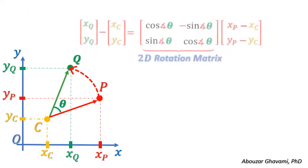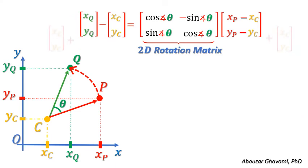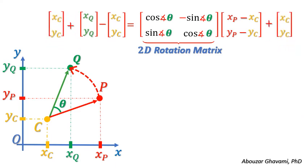Adding the coordinates of center point C to both sides of this equation, we obtain the coordinates of rotated point Q.